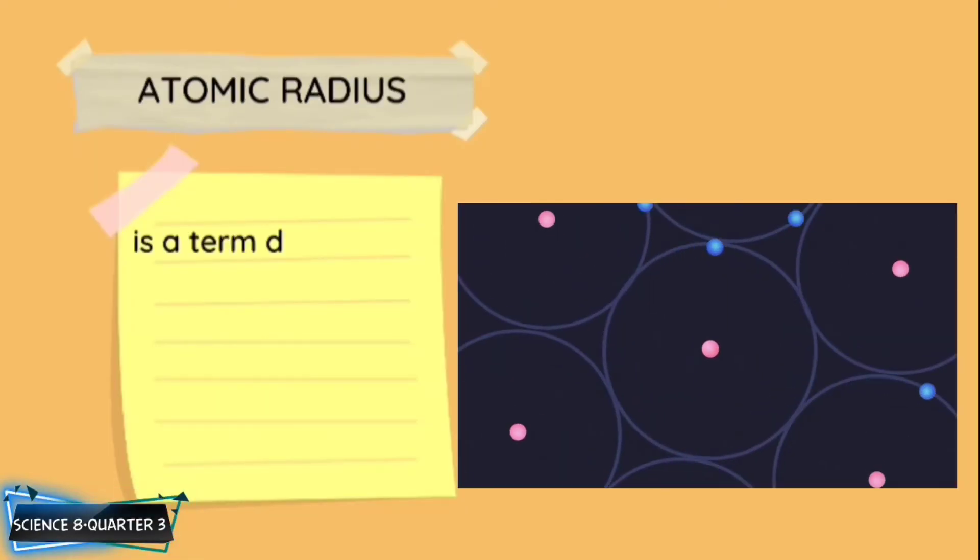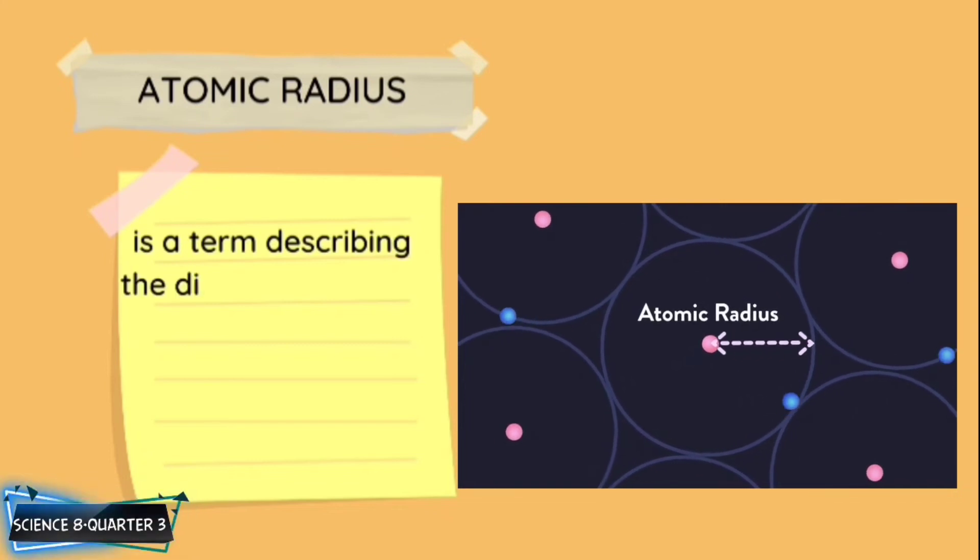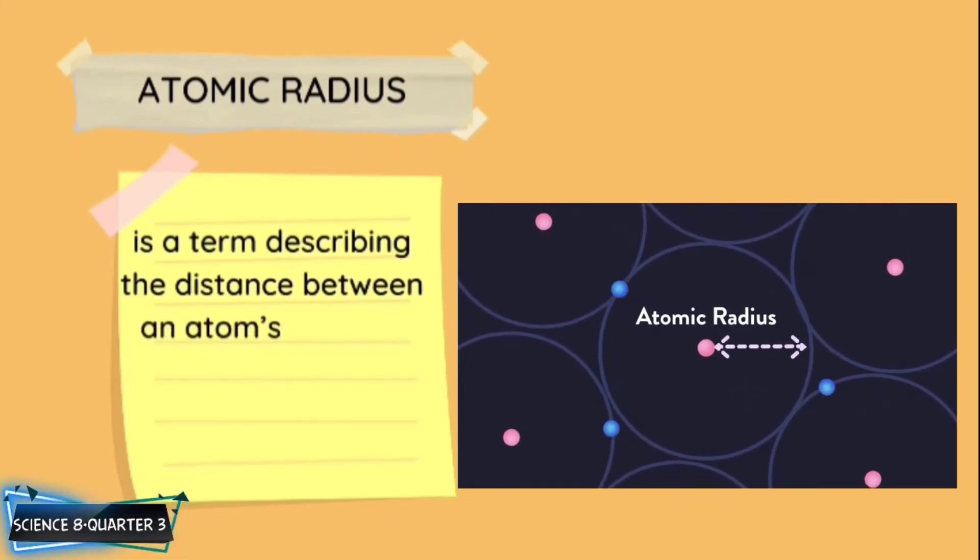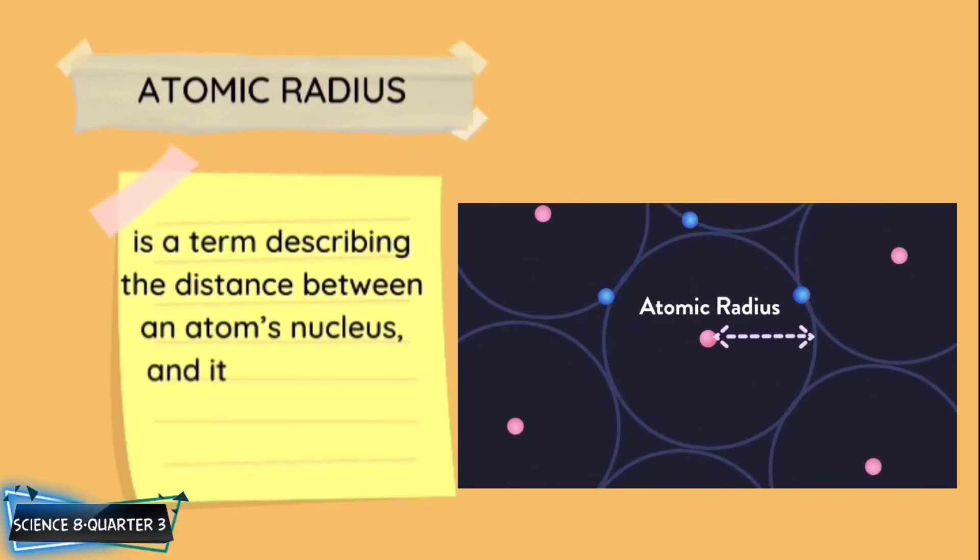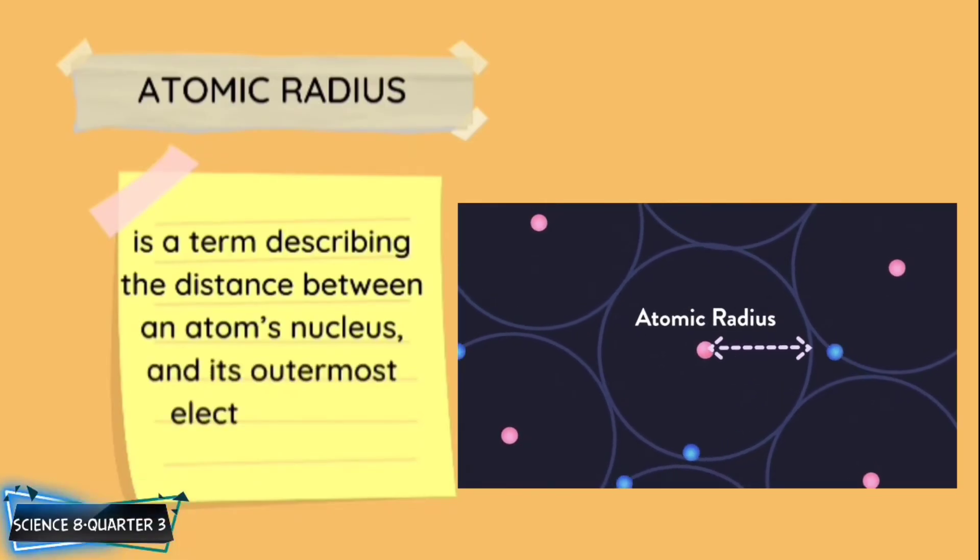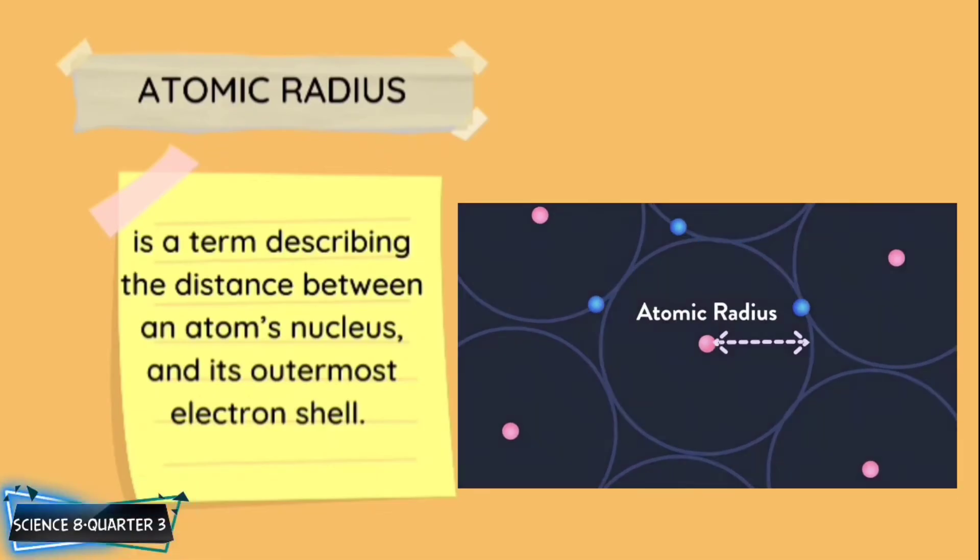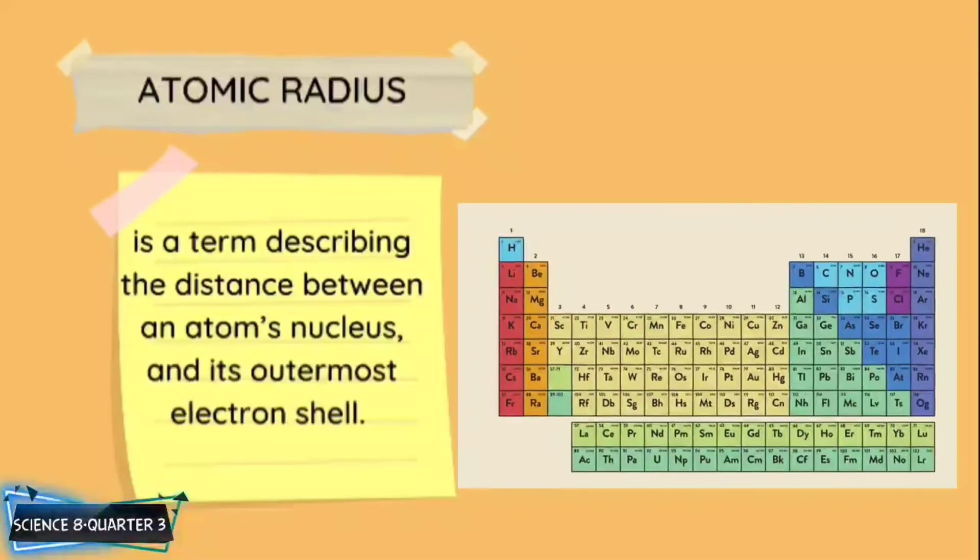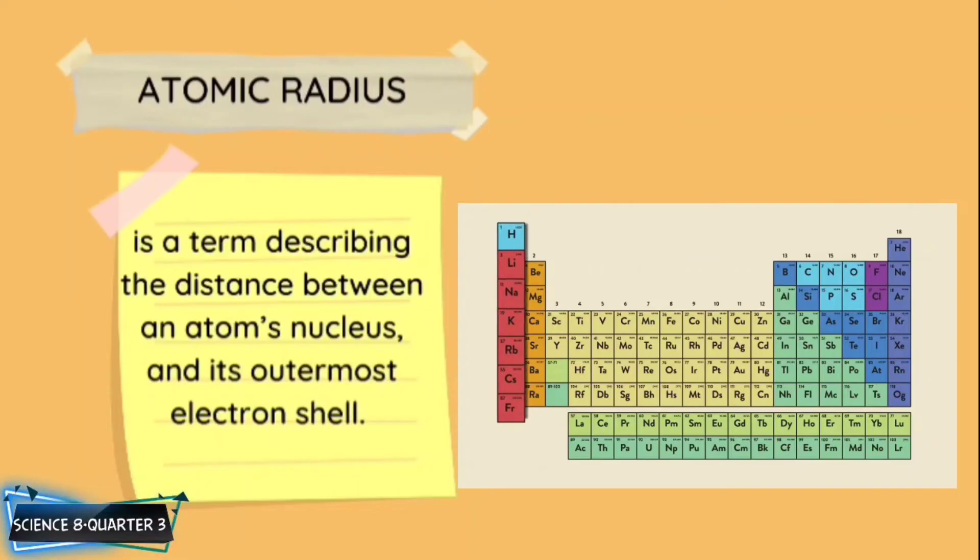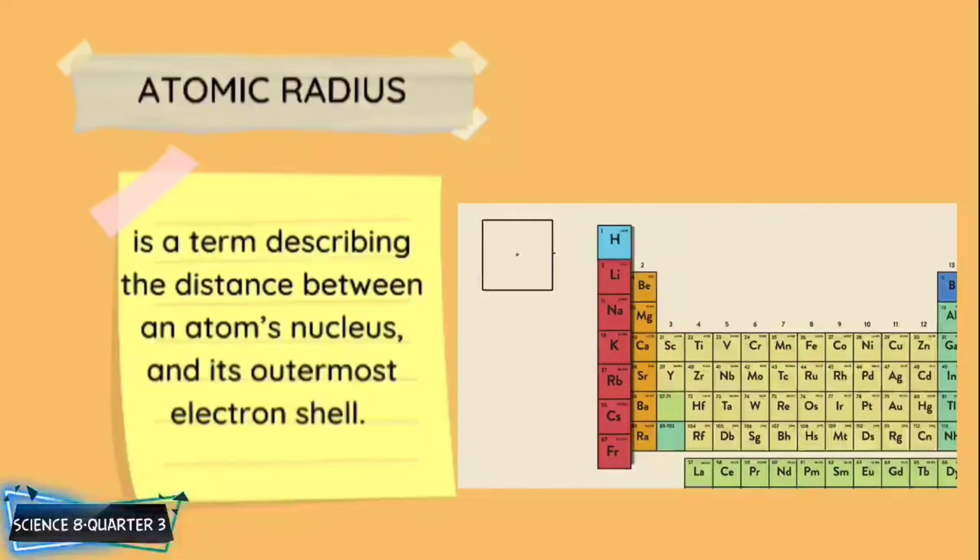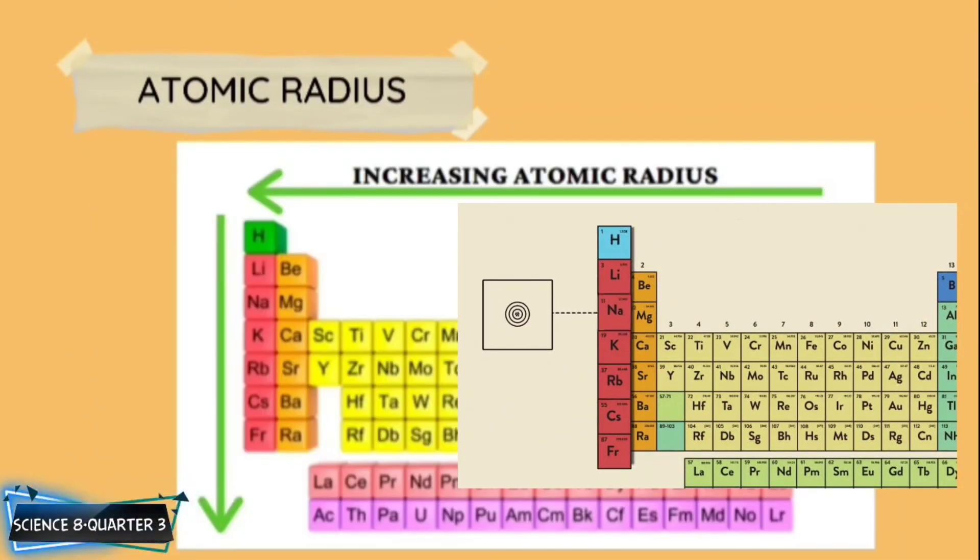Atomic radius is a term describing the distance between an atom's nucleus and its outermost electron shell. Several factors affect this distance, including the atomic number of an element and the number of electron shells. Through periodic trends, the atomic radius increases in size further left of a period and lower down a group. Following this pattern, cesium is shown to have the largest atomic radius. Now we are done!